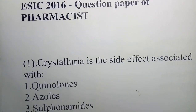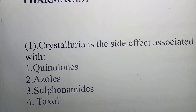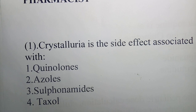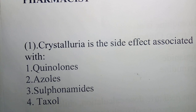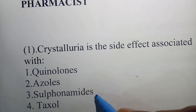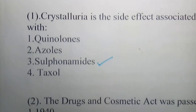Question 1: Crystal Aurea is the side effect associated with which of the following? Options are quinolones, azoles, sulfonamides, taxols. The correct answer is option 3 - sulfonamides. Sulfonamides causes crystalluria.